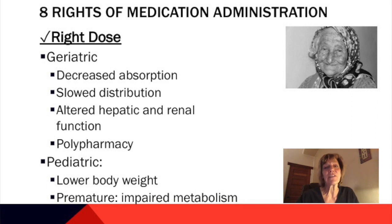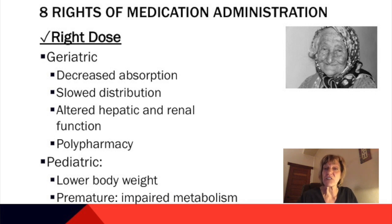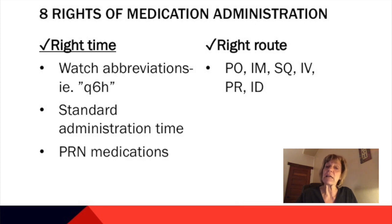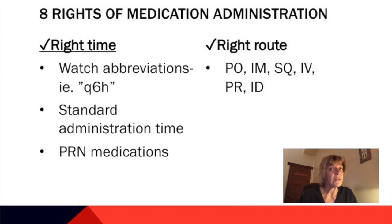Pediatric patients have lower body weight, which affects dosage, and premature patients may have impaired metabolism. Next is the right time. Make sure the medication is given at the right time, know your abbreviations, and be aware that most hospitals have standard times — for example, morning medications may be at 9 or 10 a.m. Time may also be in military time. For PRN medications, make sure you know the last time they were given and whether the interval has been met.